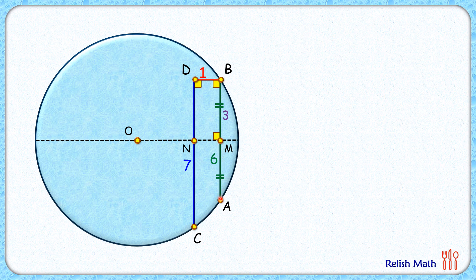Now if you look at the figure BDNM, all the angles are 90 degrees. Thus this is a rectangle and opposite sides will be equal. We can say NM is 1 centimeter, DN is 3 centimeters, and NC is 7 minus 3, or 4 centimeters.